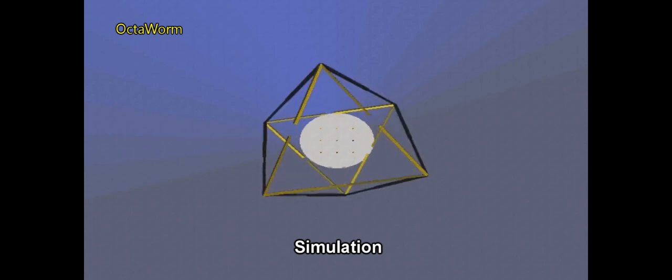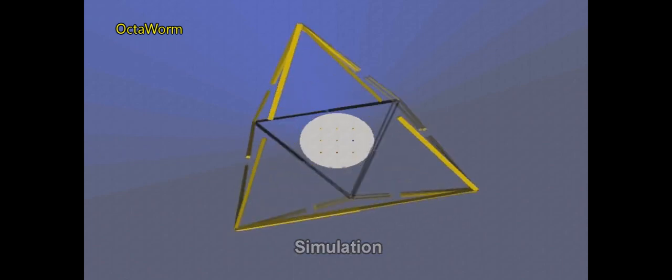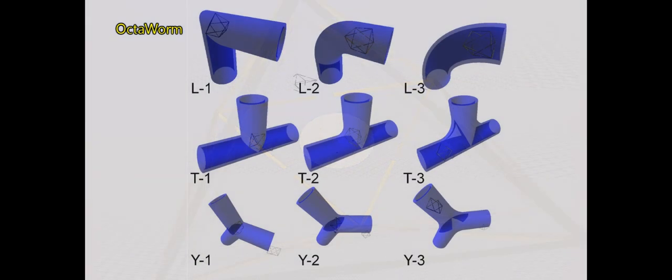The robot was able to move along intricate in-pipe sections such as T-joints, L-joints and Y-joints of different degrees of complexity.